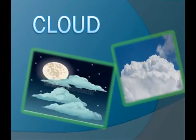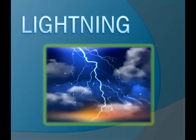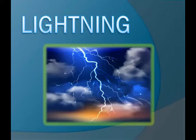The next thing which we see in the sky at nighttime is lightning. Look at this picture — this is lightning. We see lightning during the rain. At the time of lightning, the sky becomes bright. So we see lightning in the sky at nighttime.